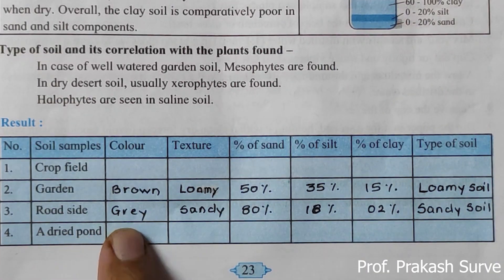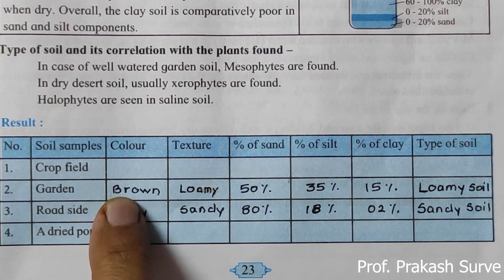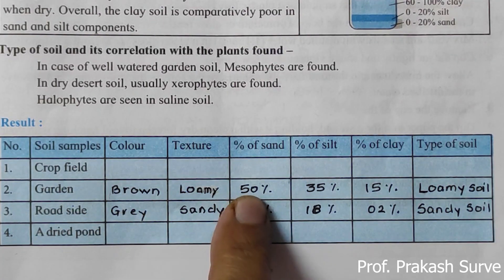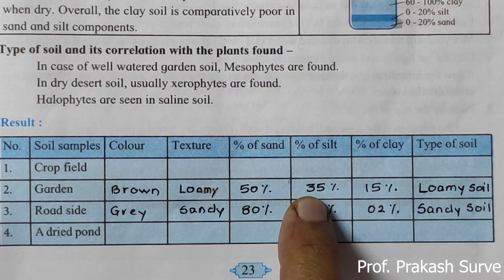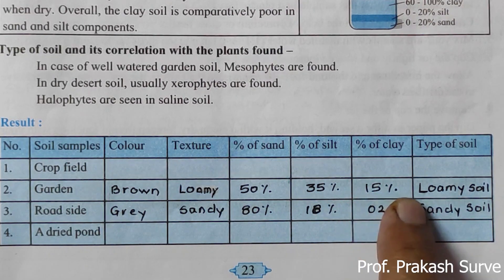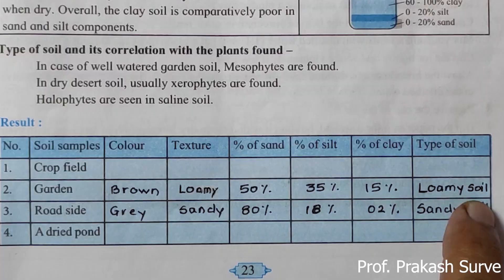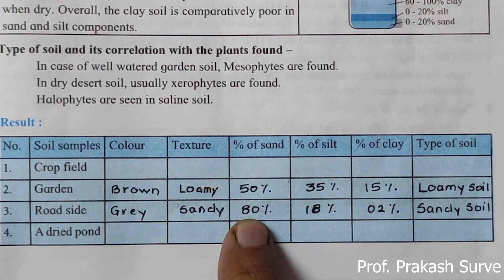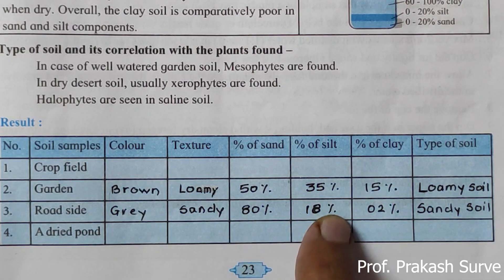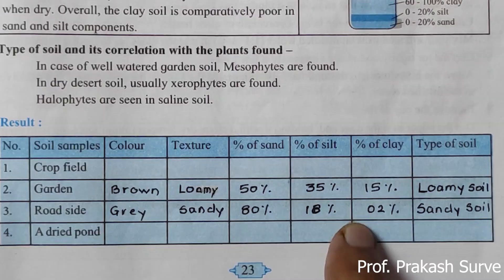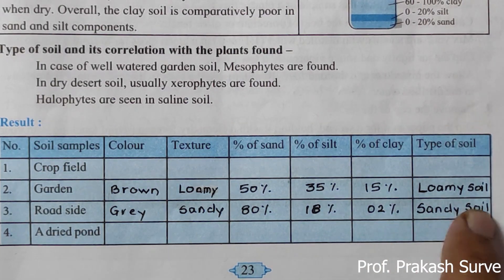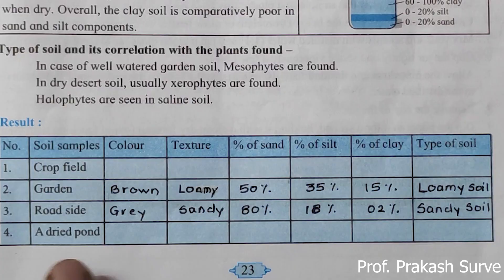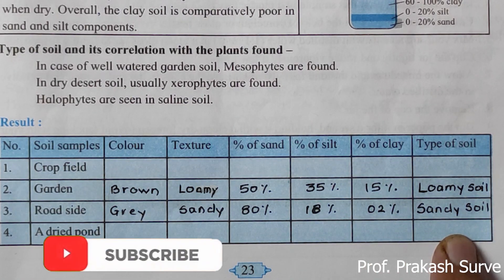The result: garden soil has a brown color, loamy texture, 50% sand, 35% silt, 15% clay — it is a loamy soil. Roadside soil has a gray color, sandy texture, 80% sand, 18% silt, and 2% clay — it is considered a sandy soil. Write this result the same way in the exam. If you like my channel, please subscribe and share with friends so everyone can benefit. Thank you.